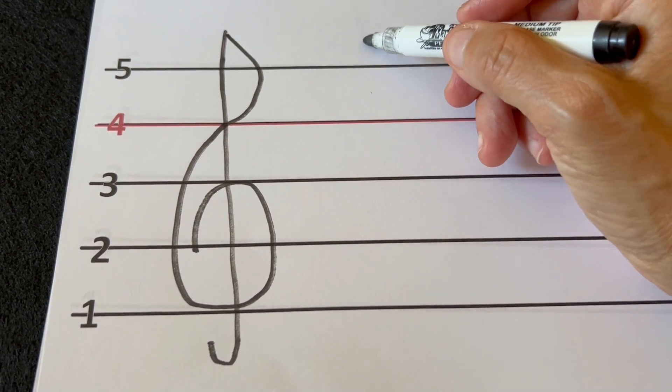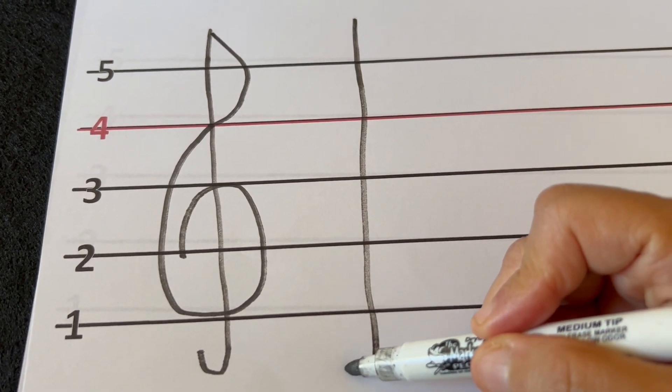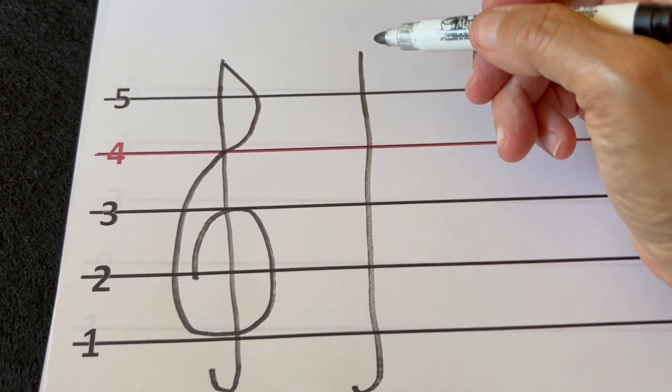So let's do that again. Starting with the letter J that goes above the fifth line and under the first line.